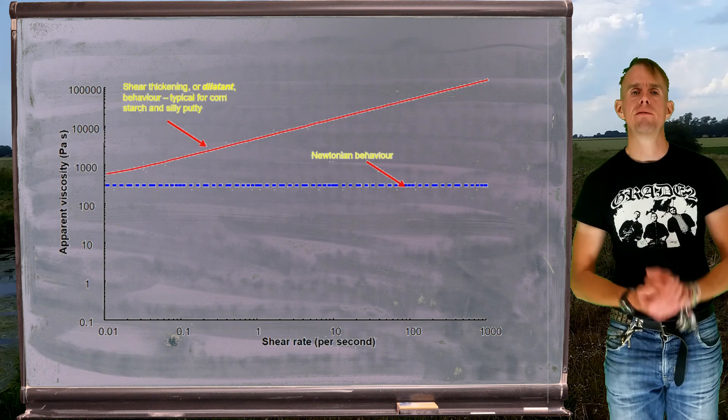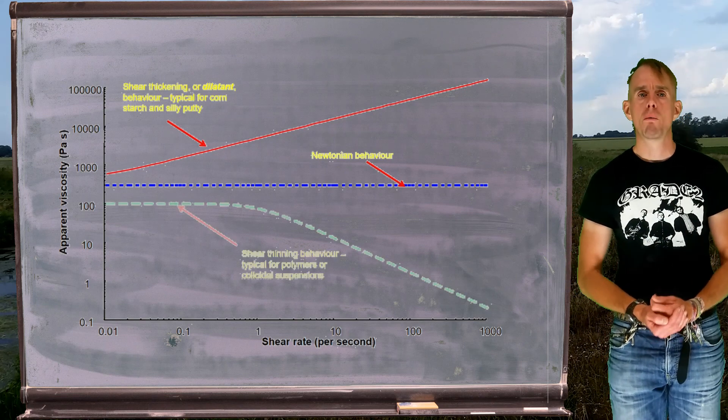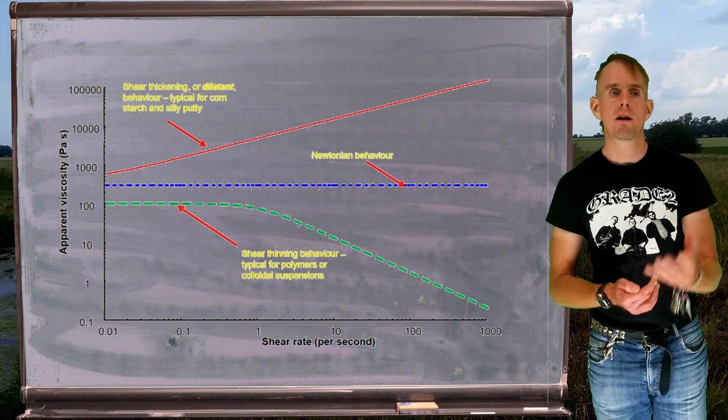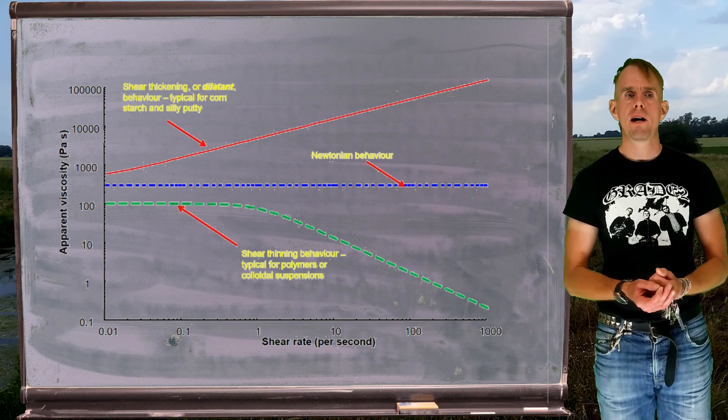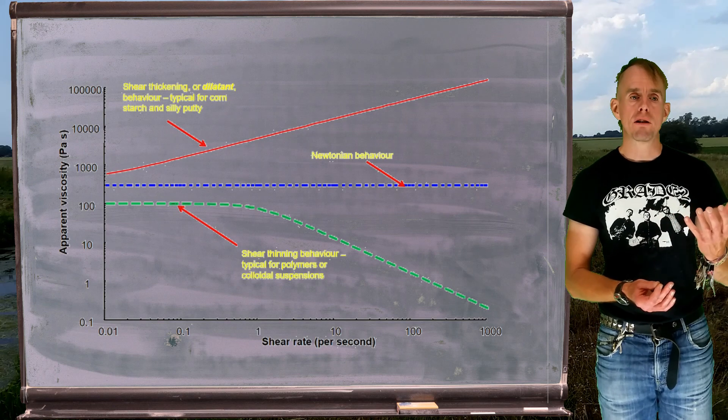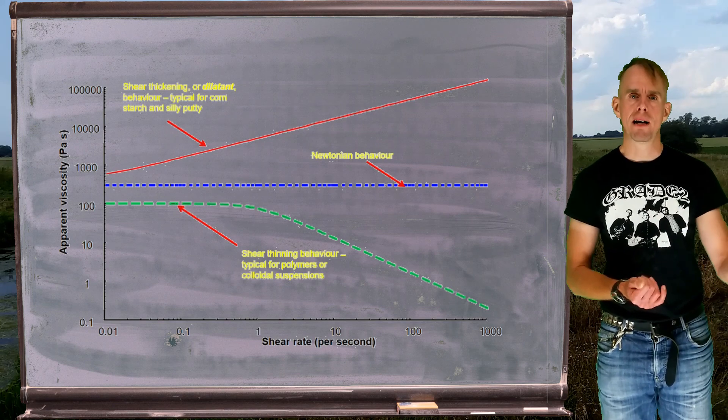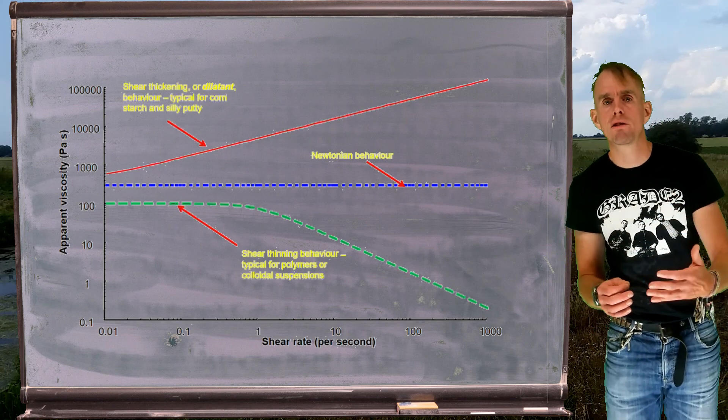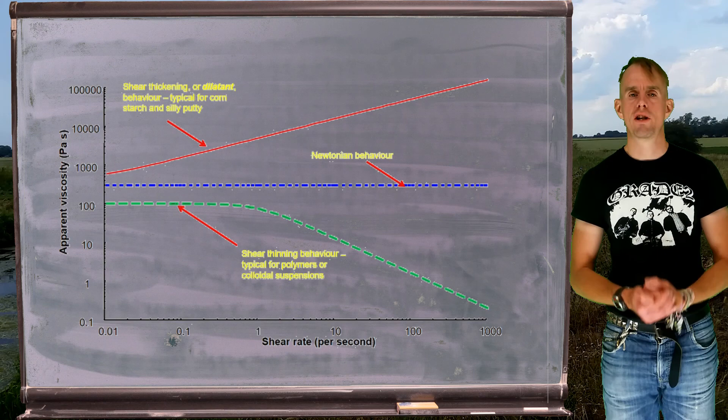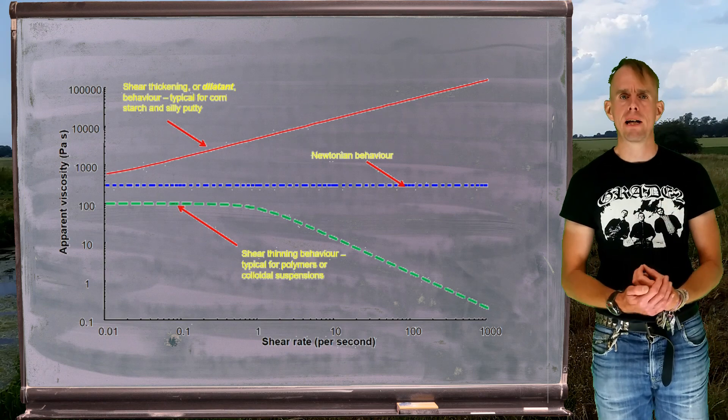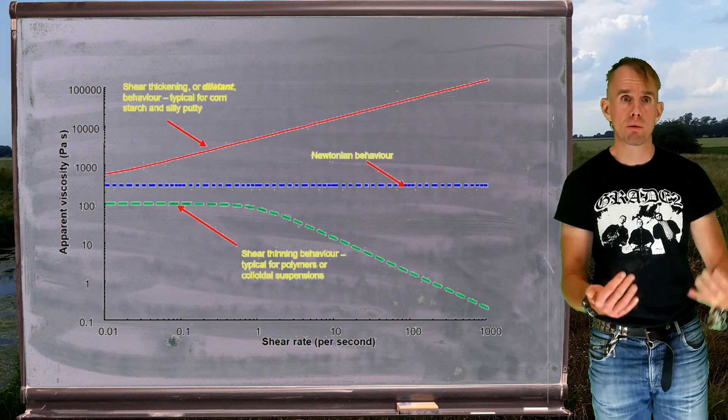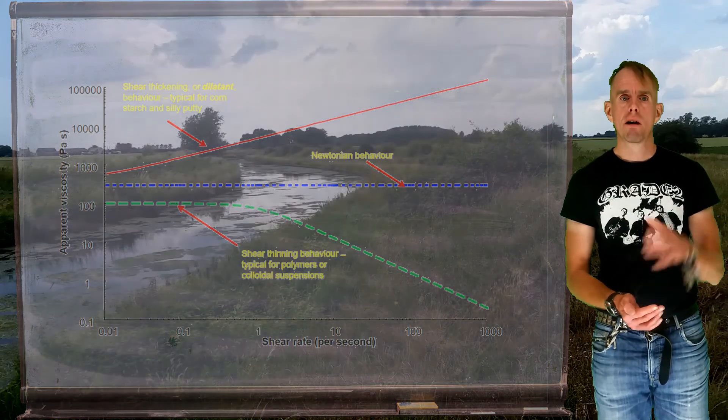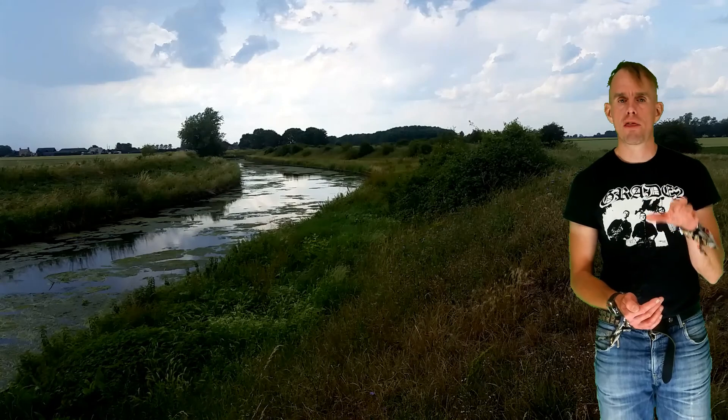A far more common behavior is shear thinning, where, with deformation, the fluid viscosity drops. Sometimes, as shown on this plot, you have what's called a plateau, a low shear rate Newtonian plateau, where you have a quasi-constant viscosity prior to decreasing viscosity with increasing shear rate. Very, very common behavior for suspensions of all sorts, suspensions of solids, suspensions of bubbles, polymer solutions, polymer melts, mostly all display shear thinning behavior.